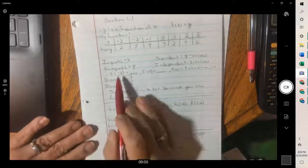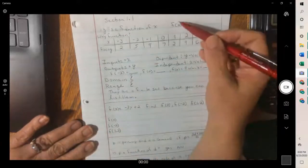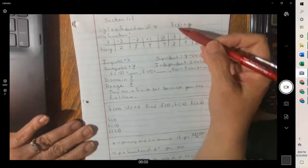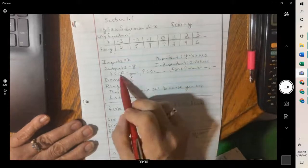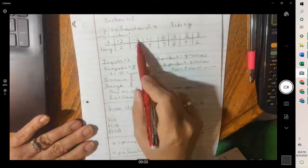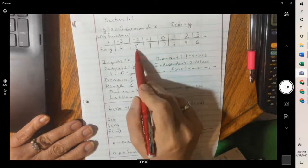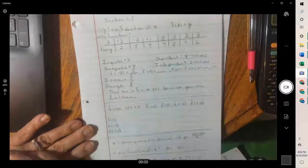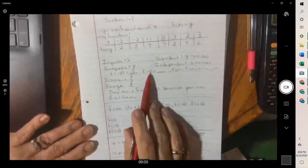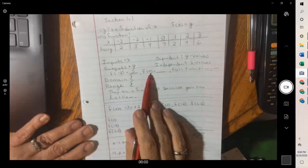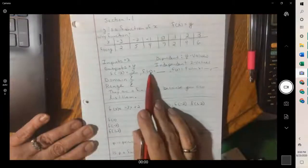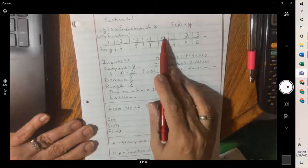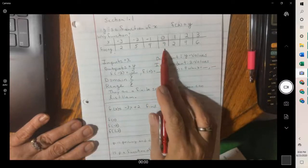When you're looking at values written like this, remember the x is the value here. So x is negative two. When x is negative two, y is five. So the other one, next one's asking f of zero. Well, that means when x is zero, what is y? Seven.